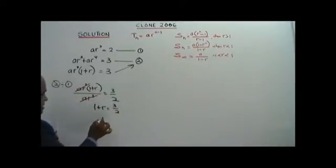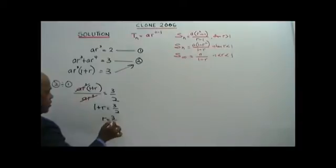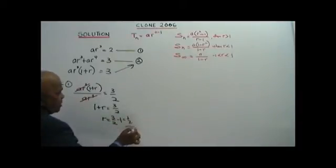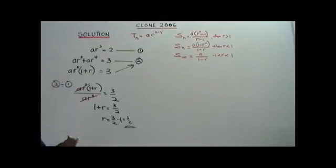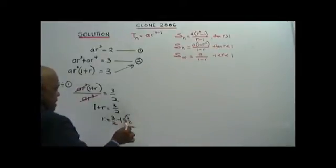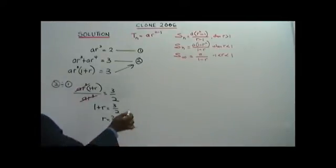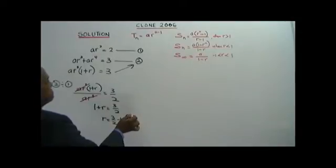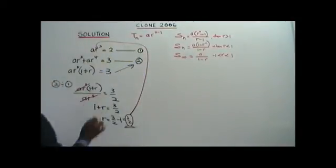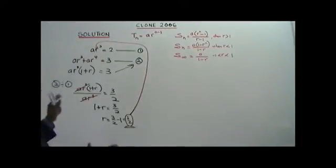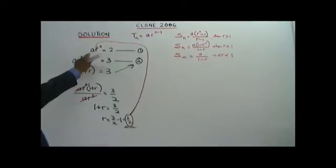From here, R equals 3 over 2 minus 1, which equals 1 over 2. That is the value of R. Now you take this value of R and substitute it into Equation 1 in order to find the value of the first term A.